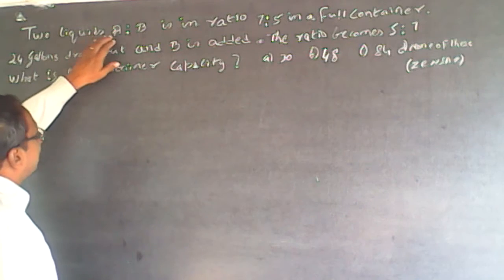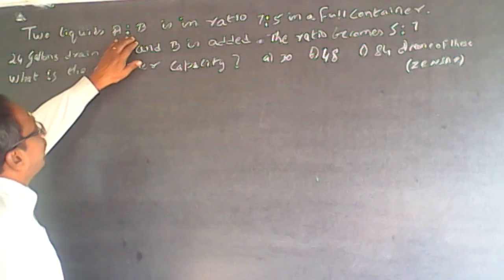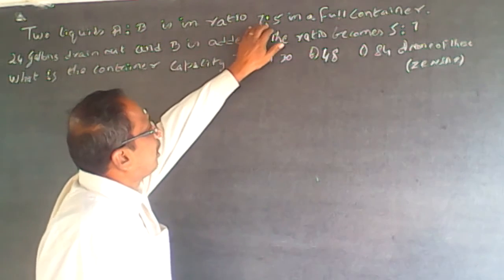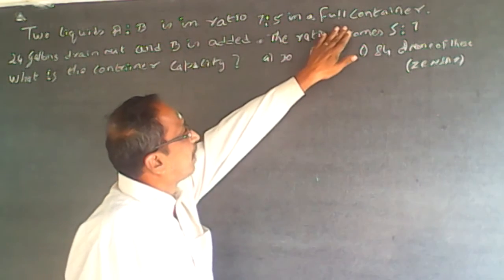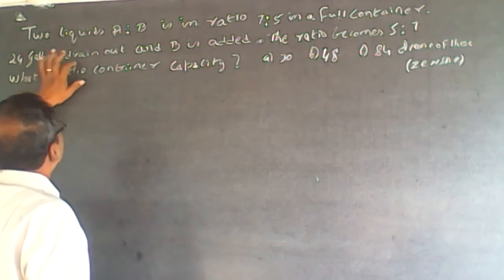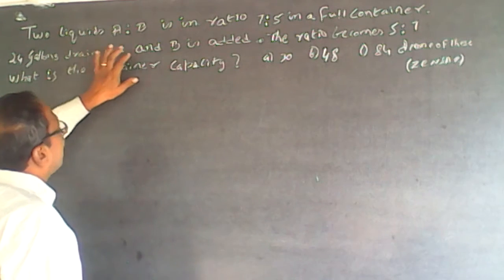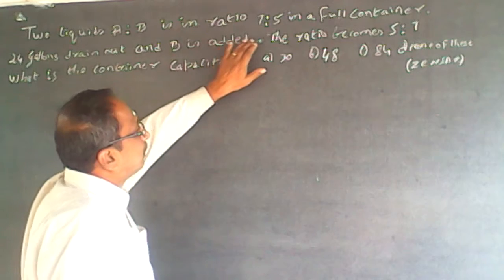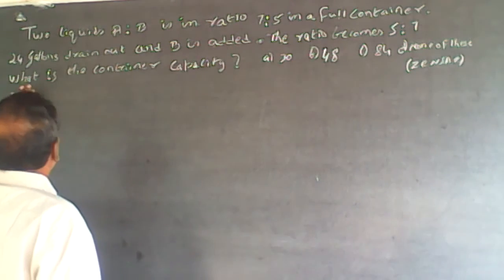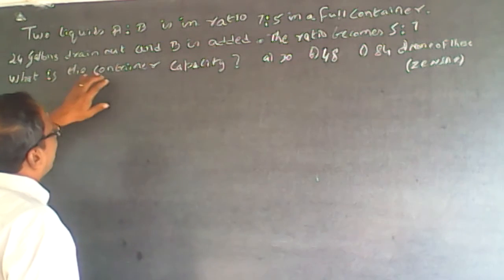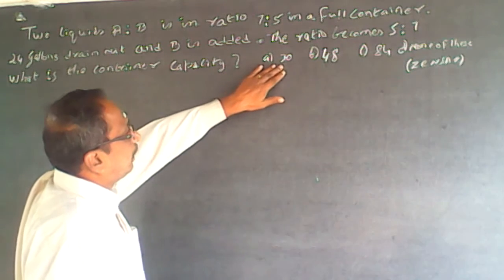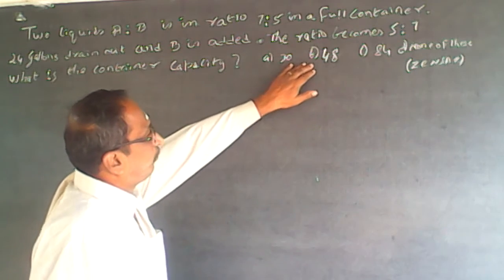Two liters A and B are in ratio 7:5 in a full container. 24 grams are drained out and B is added. The ratio becomes 5:7. What is the container capacity? Options: A) 30, B) 48.